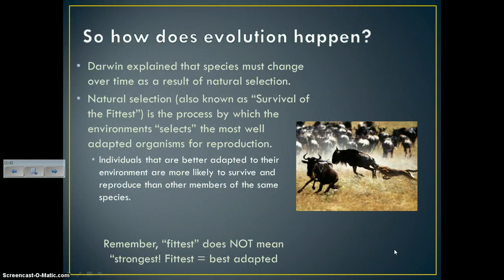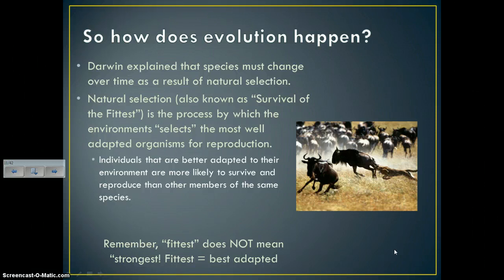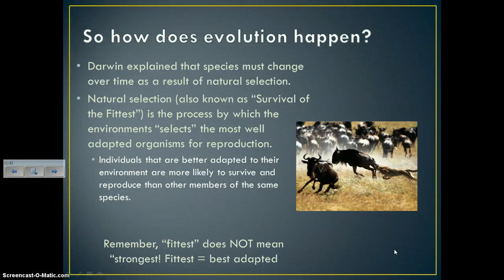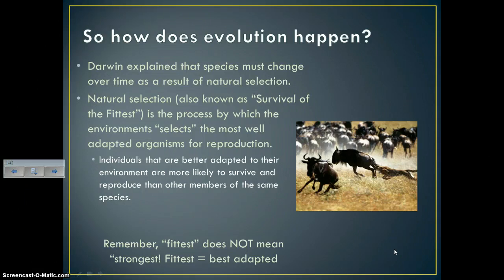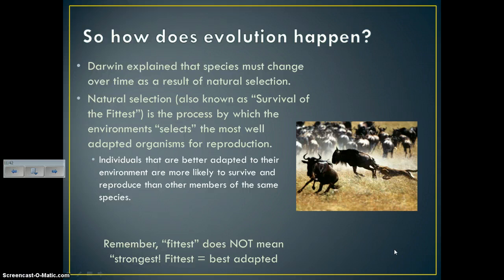Darwin explained that species change over time as a result of natural selection — the selecting done by nature, also known as survival of the fittest. It's the process by which the environment selects the most well-adapted organisms for reproduction. The organisms most likely to survive are more likely to reproduce and pass those traits to future generations. Remember: fittest does not always mean strongest. Fittest means best adapted — fitness is a measurement of adaptation, which might mean strongest, darkest colored, fastest, or even smallest, depending on the environment.